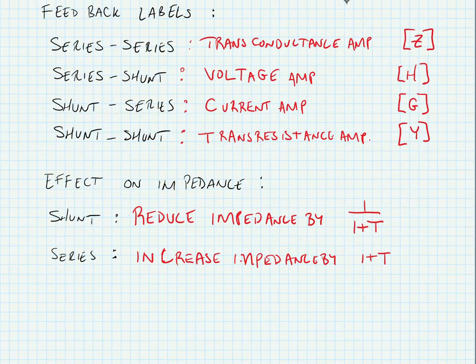Next we're going to do a brief review of two-port network parameters — specifically Z parameters, Y parameters, H parameters, and G parameters. These are the network parameters that will describe the feedback network used in the case of a transconductance amplifier, a voltage amplifier, a current amplifier, or a transresistance amplifier. We'll look at those in the next video.